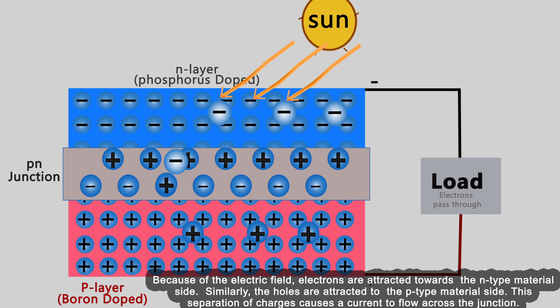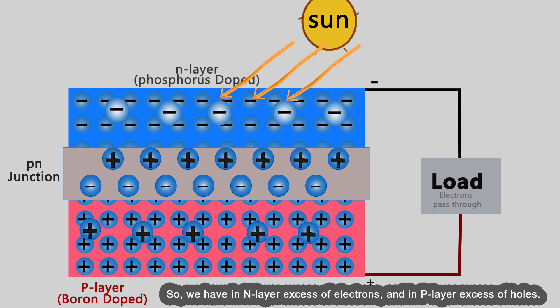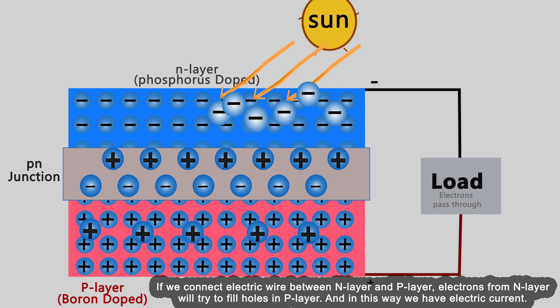Because of the electric field, electrons are attracted towards the n-type material side. Similarly, the holes are attracted to the p-type material side. This separation of charges causes a current to flow across the junction. So we have an n-layer with excess of electrons and a p-layer with excess of holes. If we connect an electric wire between the n-layer and p-layer, electrons from the n-layer will try to fill holes in the p-layer, and in this way we have electric current.